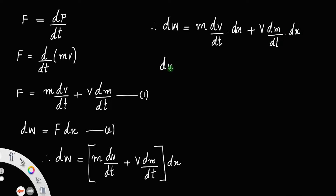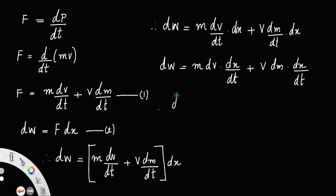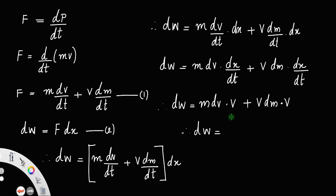This can also be written as dw equals m dv plus v dm, into dx/dt. Therefore, dw equals m dv — you know dx/dt, the rate of change of position with respect to time, is velocity — into v, plus v dm/dt. Here again dx/dt is v. Therefore dw equals mv dv plus v squared dm. Call this equation number 3.